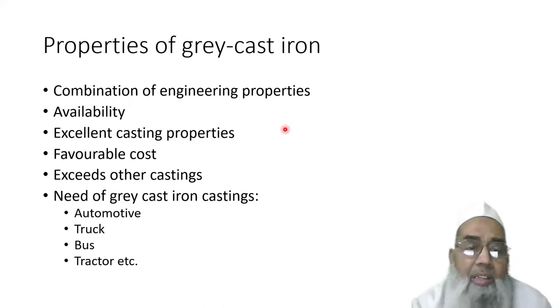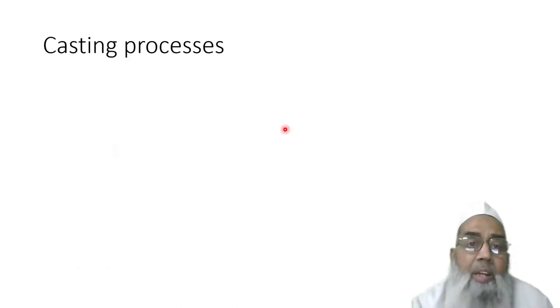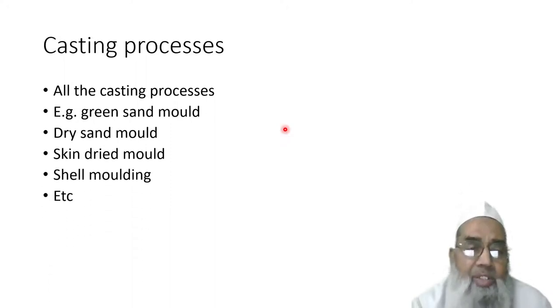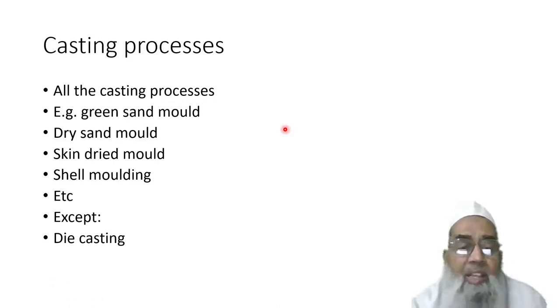We can adopt all the casting processes for example green sand mold, dry sand mold, screen dried mold, shield molding, etc. for making grey cast iron products. However, die casting can't be utilized because its pouring temperature is very high, and therefore the permanent mold or dies for die casting have limitations.